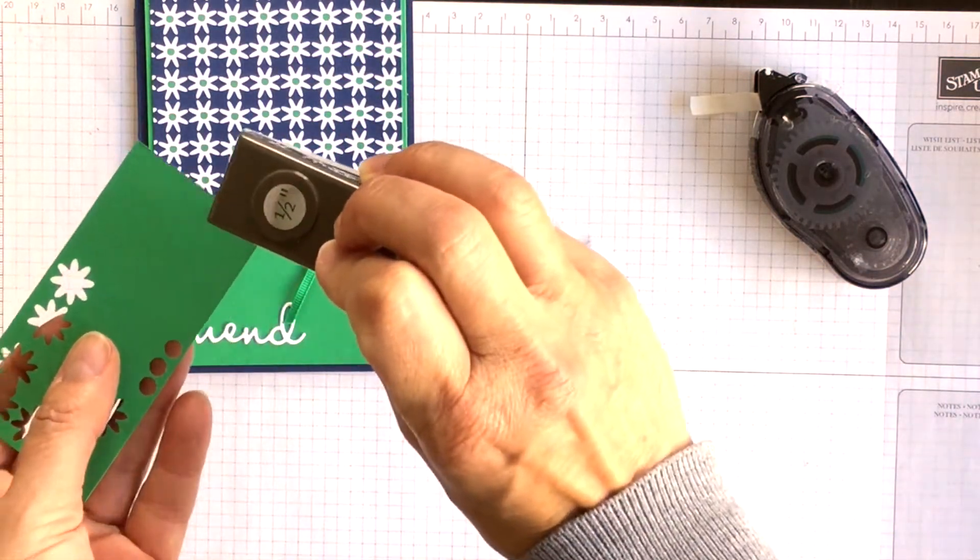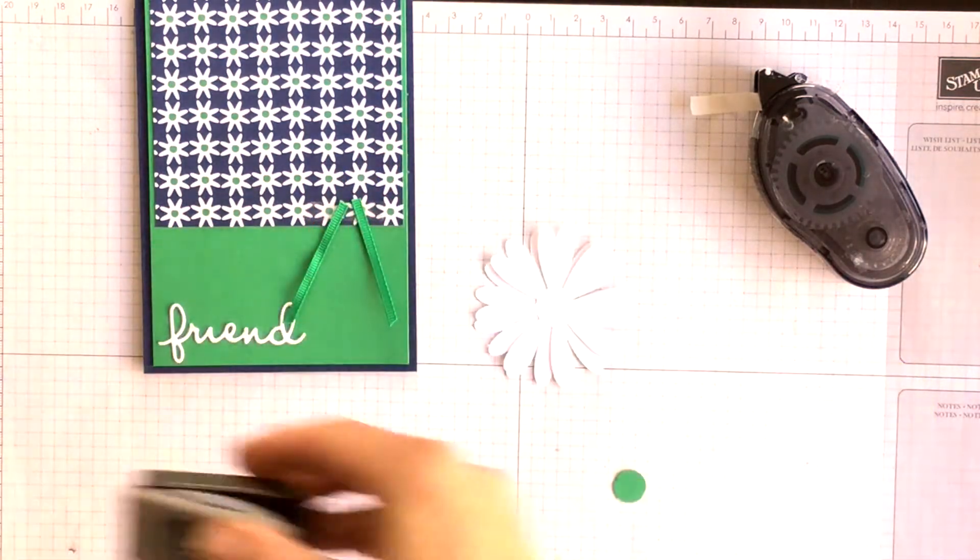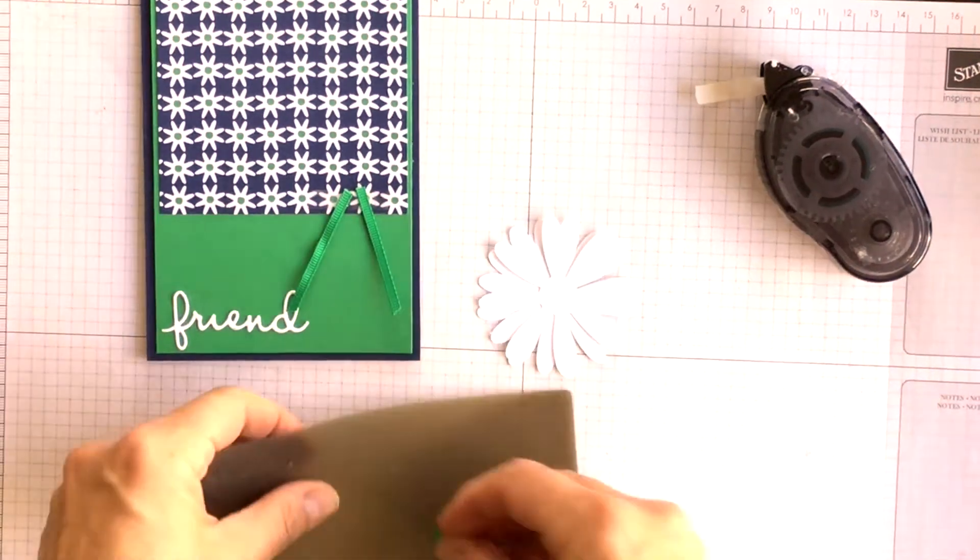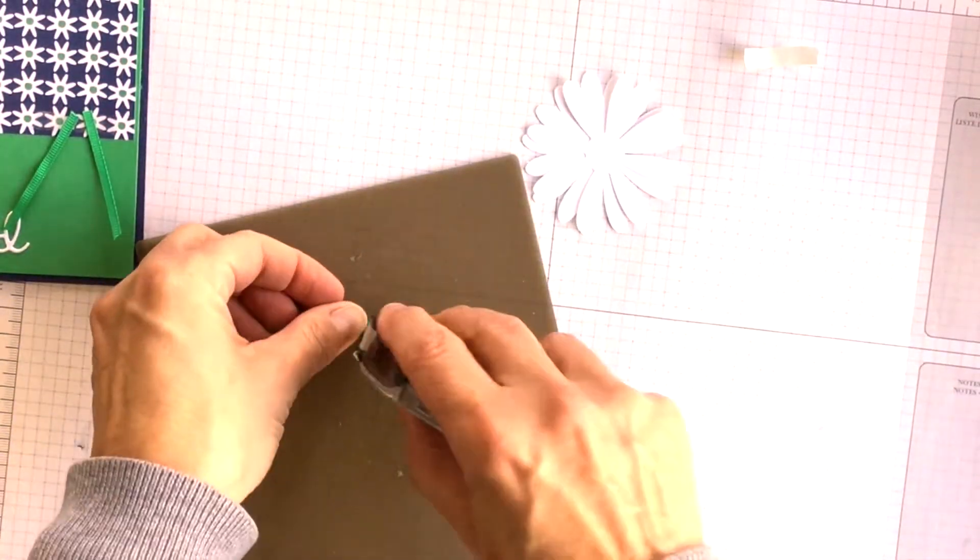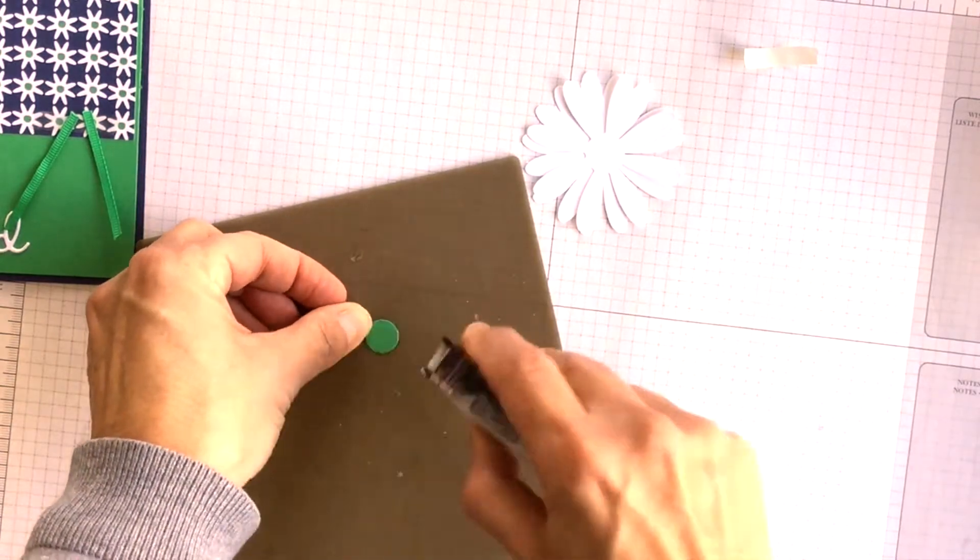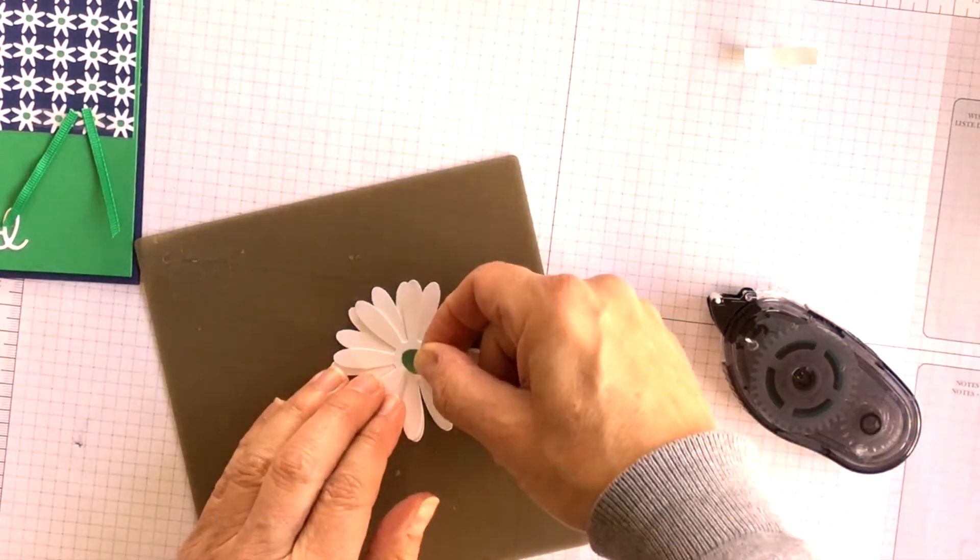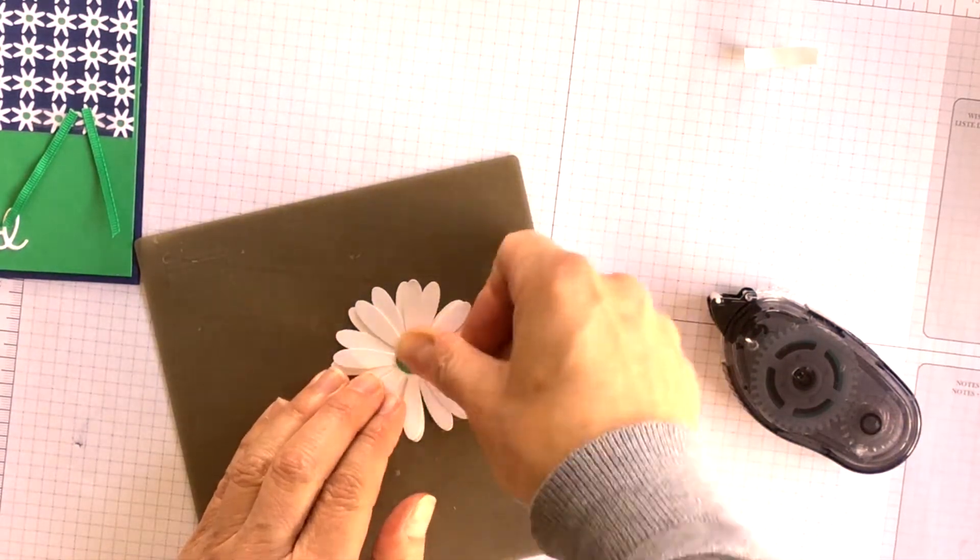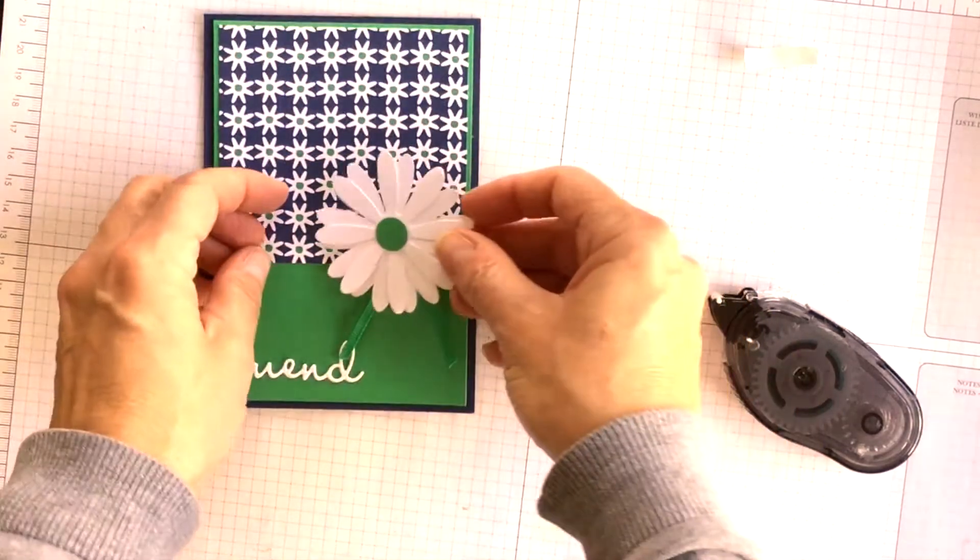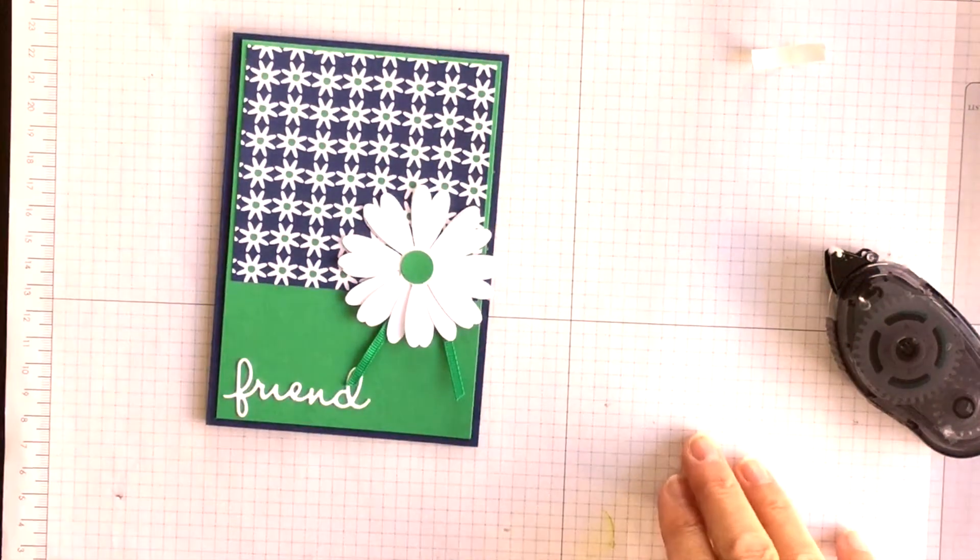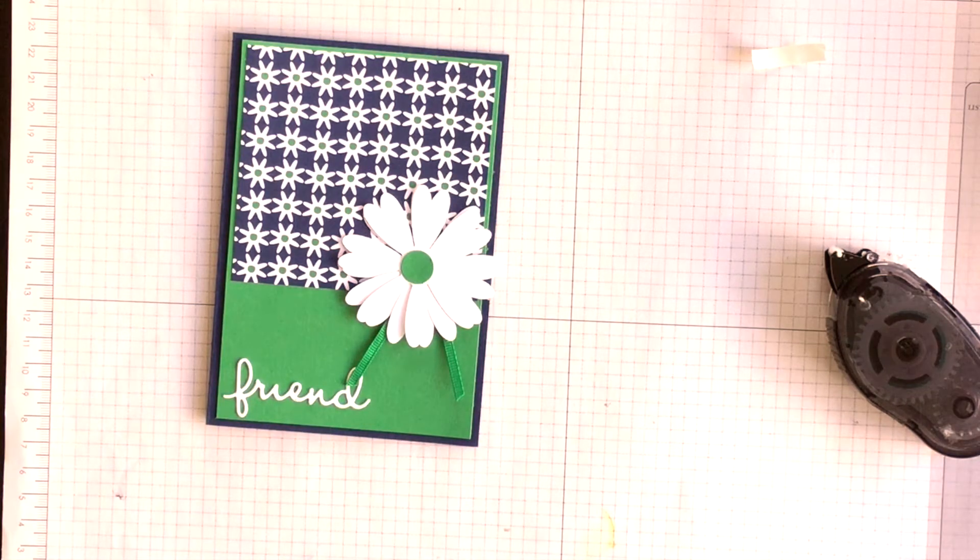I've got my one half inch circle punch and I'm going to punch the circle and I'm going to adhere it to the front of my daisy. I'm doing this because I want it to match the pattern in the designer series paper. Again you could use a Stampin' Dimensional to pop it up and I'm very happy with how this is all turning out.